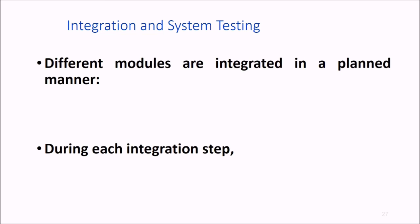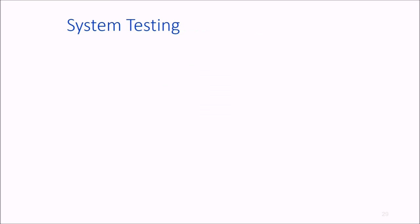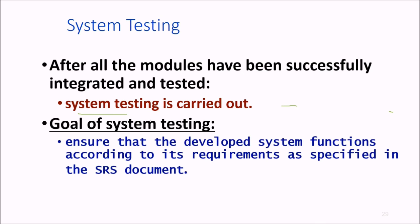Then comes the integration and system testing part. Different modules are integrated in a planned, well-organized manner. Modules are almost never integrated in one shot. Normally integration is carried out through a number of steps, and during each integration step the partially integrated system is again tested. When all modules have been integrated properly and tested, then we perform a final testing which is called system testing. We perform system testing to ensure that the developed system functions according to requirements as specified in the SRS document.